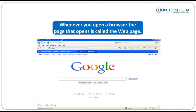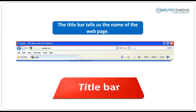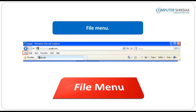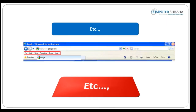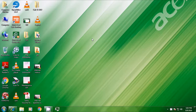Whenever you open a browser, the page that opens is called the web page. On the top it has a title bar which tells us the name of the web page. The browser also has some menu options using which you can manage your browser, like file, edit, view etc. You can learn more about the usage by watching the video.